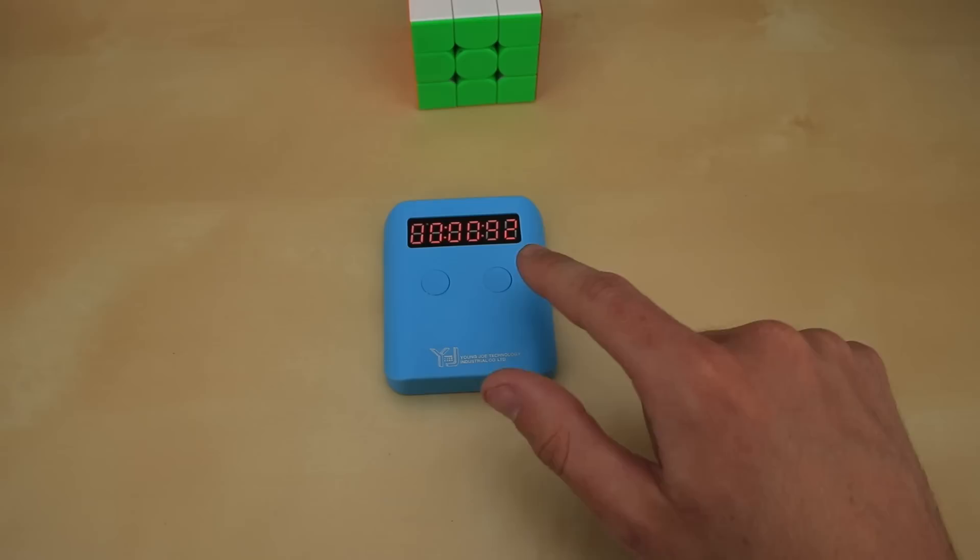Hitting this other button here I believe gives you some information on your average times. If you hit it once, I think that's your average of 5; again, I think that's your average of 12; and again, I think that's your overall average. So it just cycles between those three numbers. Don't quote me exactly on that, but you can just hit reset and it will go back to normal.